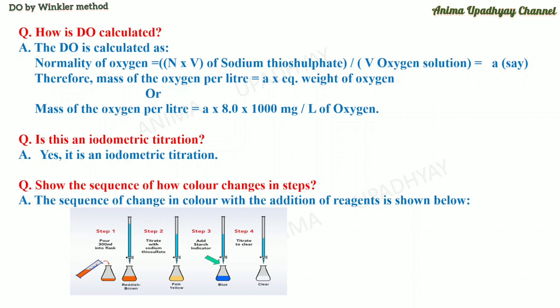Here you can see images showing the sequence of color changes. The first image shows 100 ml water sample from the BOD bottle with a reddish-brown color. Sodium thiosulfate solution is added from the burette; when it becomes pale yellow, starch is added and the blue-black color forms in the conical flask. Addition of sodium thiosulfate is continued without refilling the burette until the color changes to milky white at the end point.